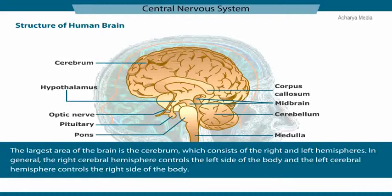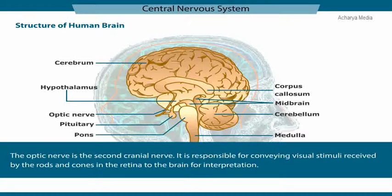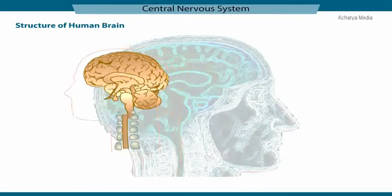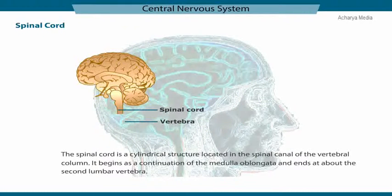The largest area of the brain is the cerebrum, which consists of the right and left hemispheres. In general, the right cerebral hemisphere controls the left side of the body and the left cerebral hemisphere controls the right side of the body. The optic nerve is the second cranial nerve, responsible for conveying visual stimuli received by the rods and cones in the retina to the brain for interpretation. The spinal cord is a cylindrical structure located in the spinal canal of the vertebral column, beginning as a continuation of the medulla oblongata and ending at about the second lumbar vertebra.